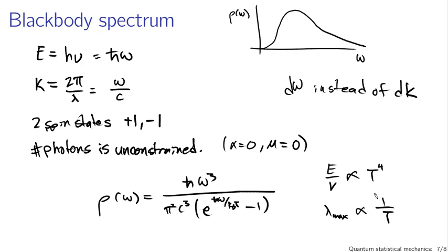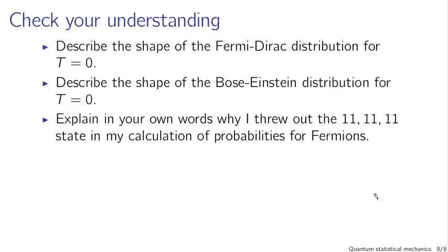The level of mathematical complexity is above and beyond what I'd expect you to do at this point in the term. What I do need you to do is understand how the Fermi-Dirac and Bose-Einstein distributions actually behave: describe the shape of each distribution for the T = 0 case, and explain in your own words why the (11, 11, 11) state was excluded in the fermion probability calculation. If you have those basic facts down, you have a working understanding of quantum statistical mechanics.